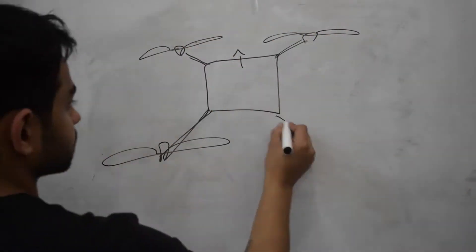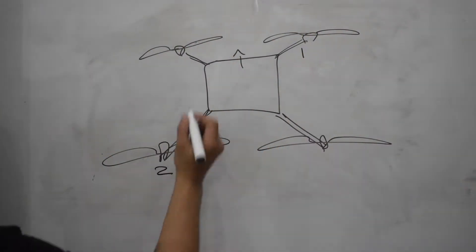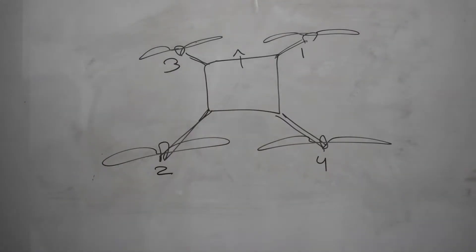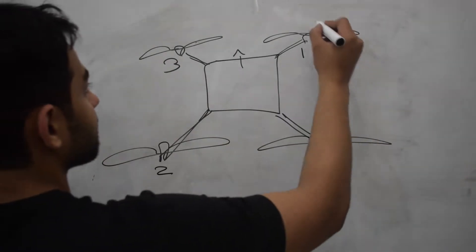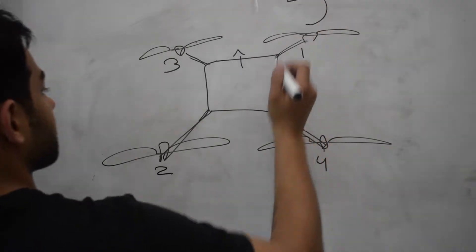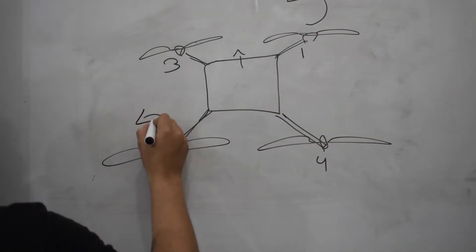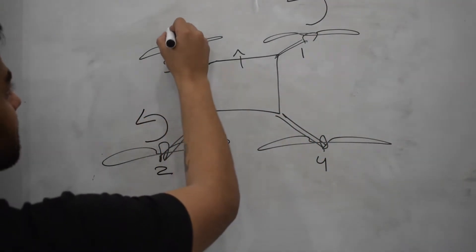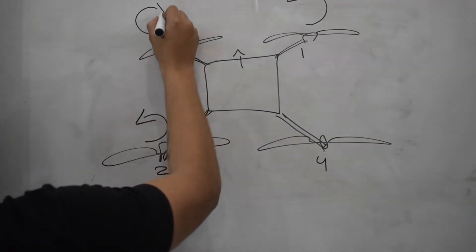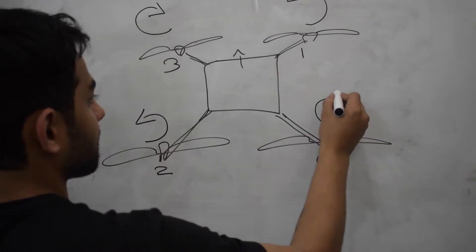Here is my quadcopter again, facing the top of the board. The motors are in order 1, 2, 3, and 4. Motors 1 and 2 rotate counterclockwise, and 3 and 4 rotate clockwise.